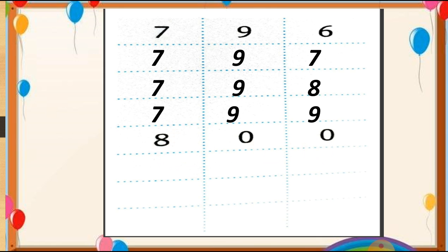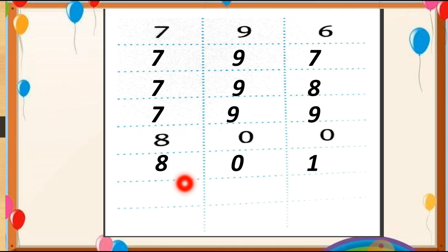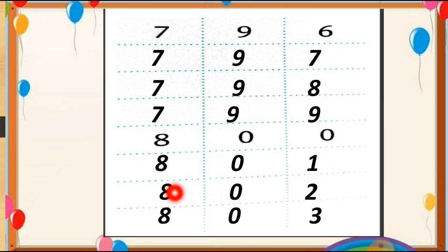After 800, we start with 801. The number 1 is at the 1's place, the 10's column is empty, and at the 100's place is 8. So we write 801. After that, 802 and 803 follow. This way we have to complete this table. Hope your answer is right — check your answer with this table, students.